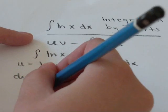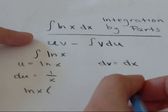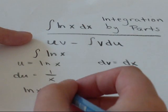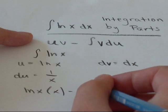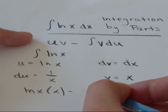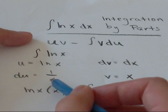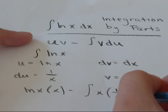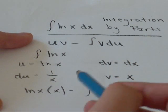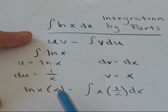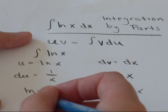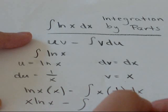So u is log x times v is x minus the integral of v, which is x, times du, 1 over x. And don't forget your dx. So log x times x, I'm just going to rewrite as x log x minus the integral.